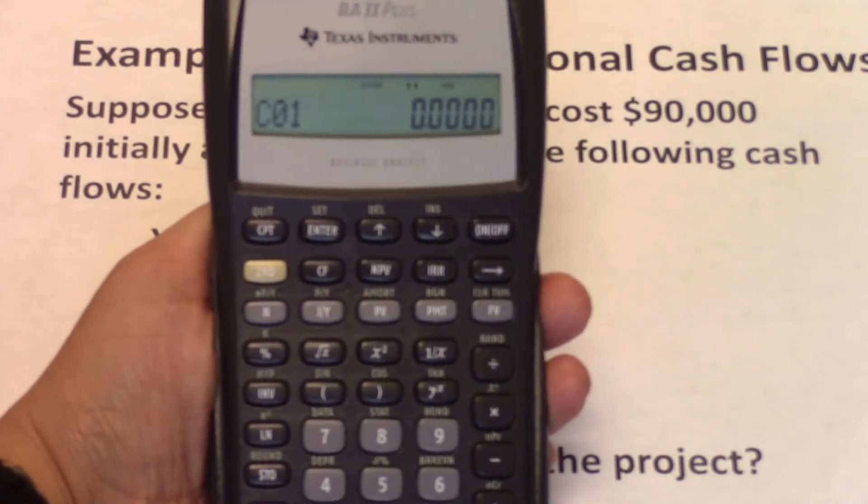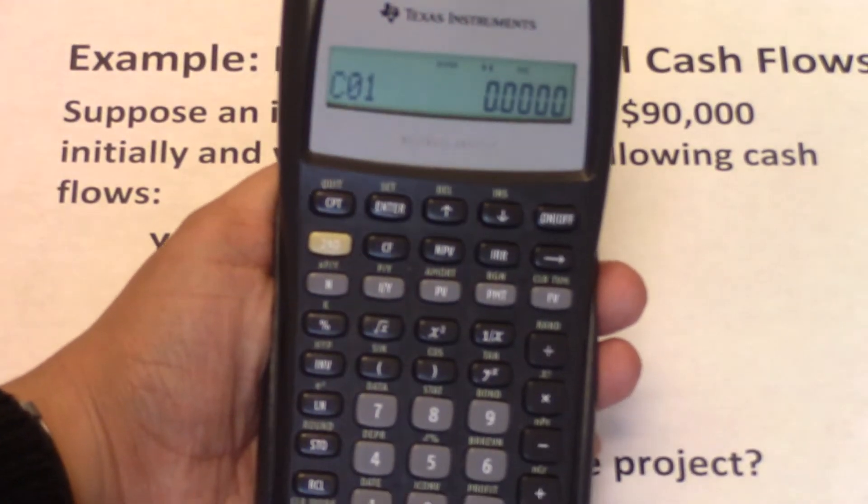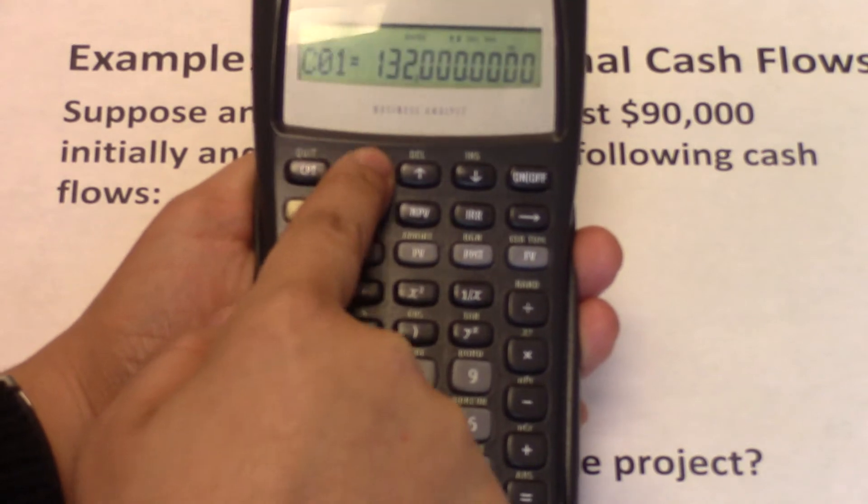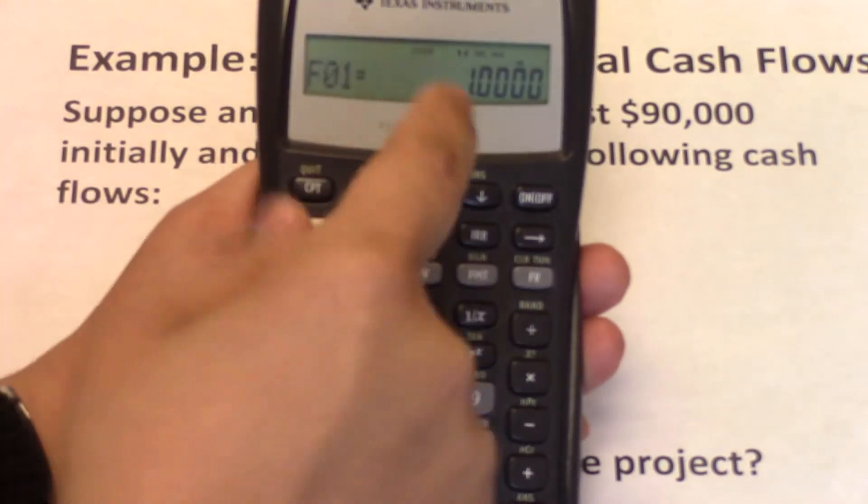You're asked for cash flow year one. Cash flow year one is $132,000. So we input $132,000. Enter, down arrow. Frequency of the payment is one. So we keep it as that.